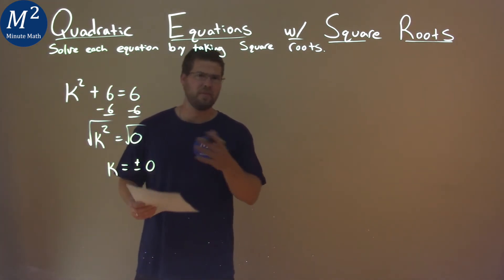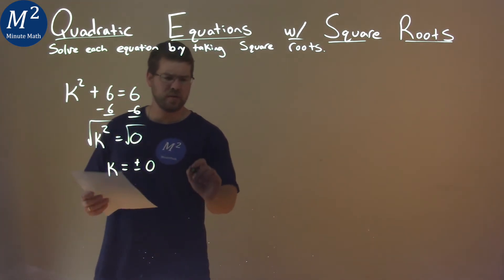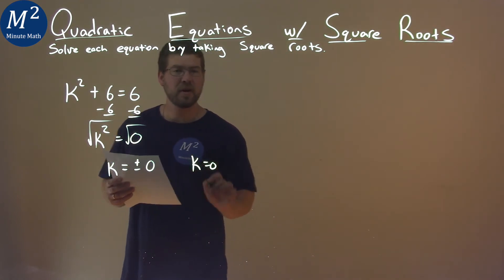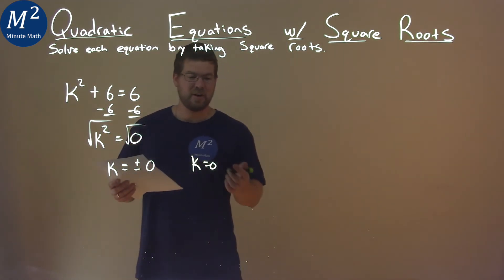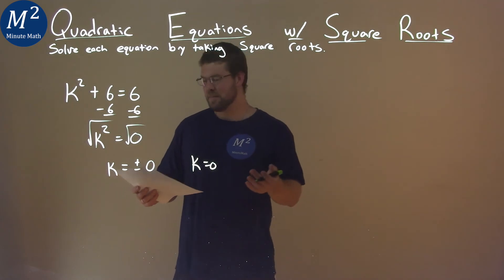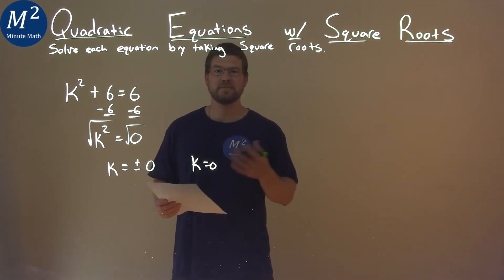So what does that leave me? Do we have positive and negative 0? No, k just equals 0, and that's it, our final answer. It's pretty simple, just k equals 0.